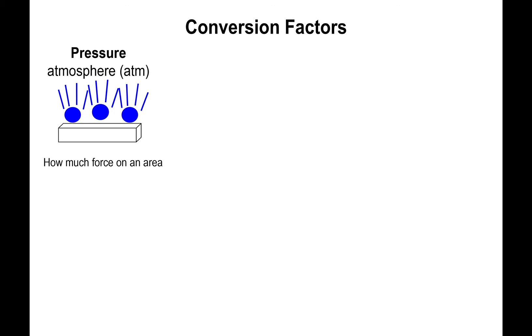Alright, so let's take a look at the second example. This time around we're going to look at pressure, and the equality I want to present is the one between atmospheres and pounds per square inch. They both represent pressure, and in one atmosphere we have 14.7 PSI.